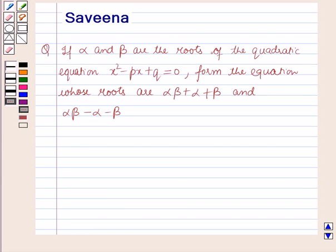Hello and welcome to the session. In this session we will discuss a question which says that if alpha and beta are the roots of the quadratic equation x squared minus px plus q equals 0, form the equation whose roots are alpha·beta plus alpha plus beta, and alpha·beta minus alpha minus beta.